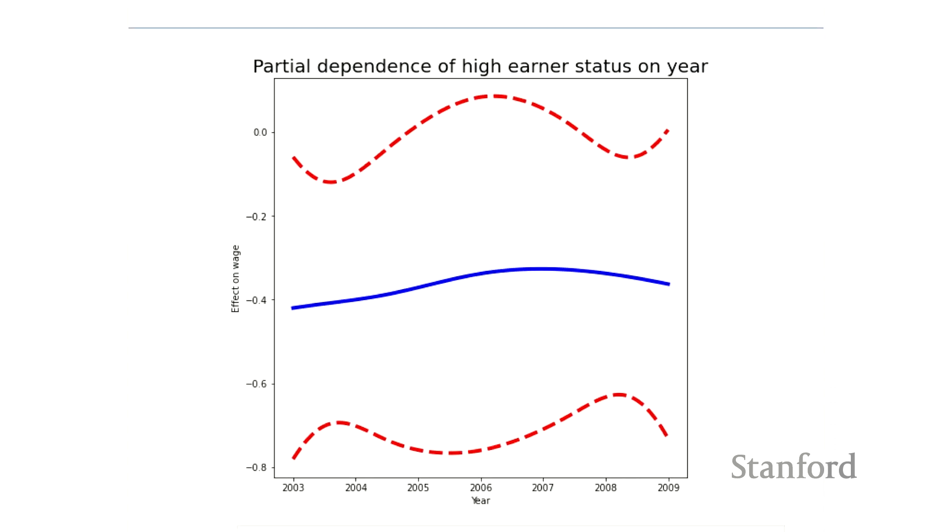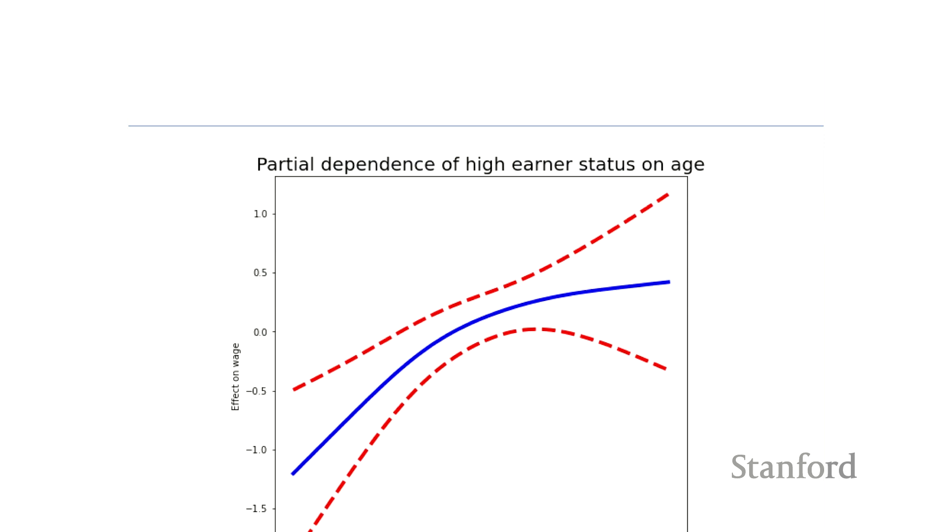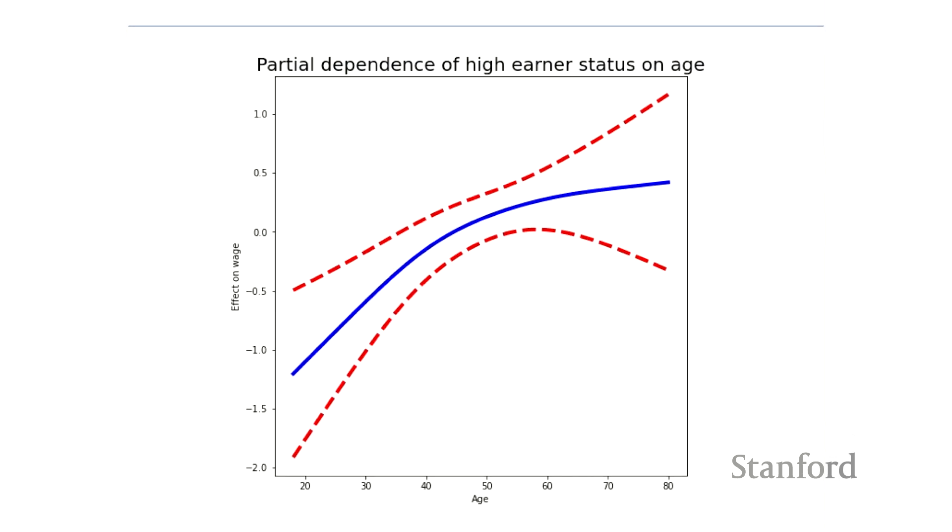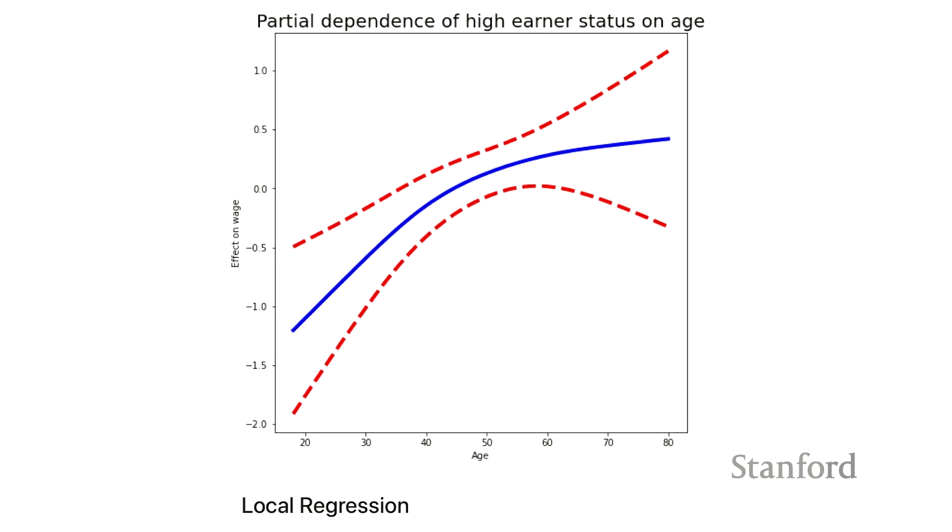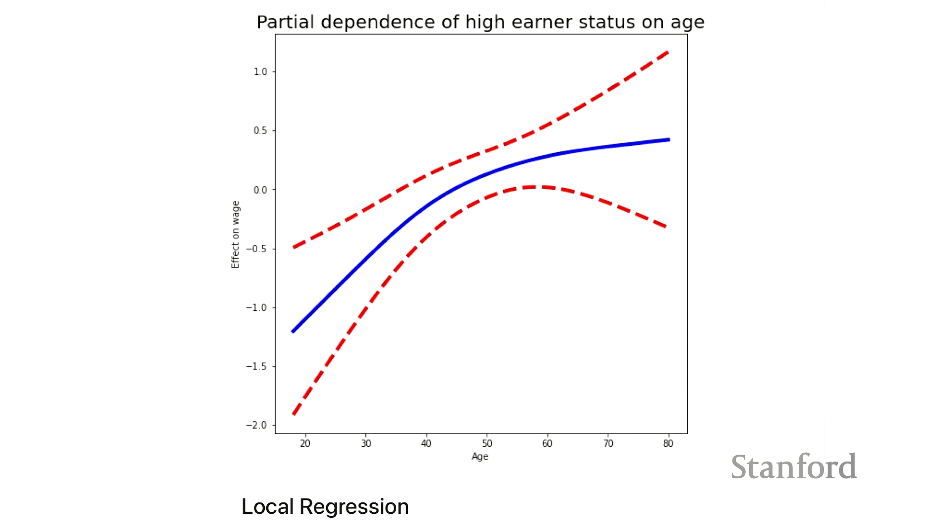And just like the linear GAMs, we can produce partial dependence plots for each of the features. Here, this is the partial dependence plot for year. And I think we have the partial dependence plot for age. And actually, interestingly, this one doesn't seem to have that precipitous drop-off that we saw when we just modeled with age. So that's good news. I'm glad to see that. Maybe it's because I've had a good education.